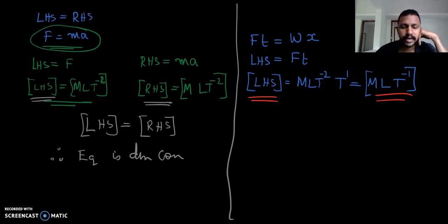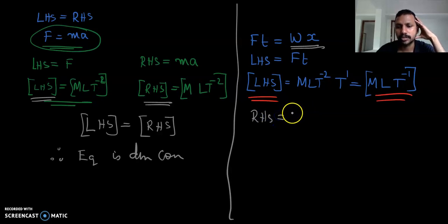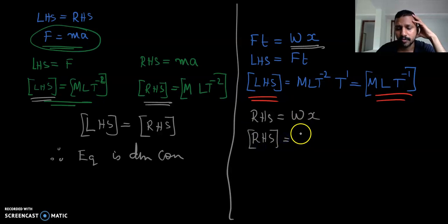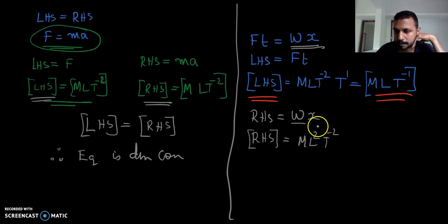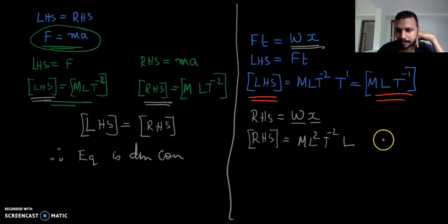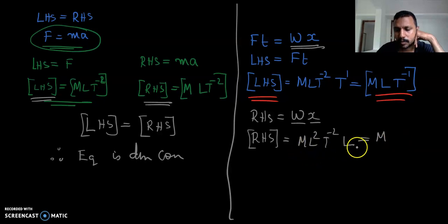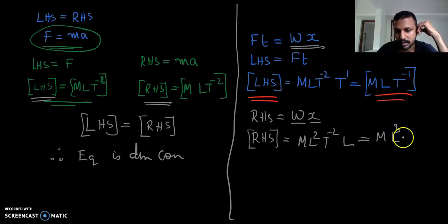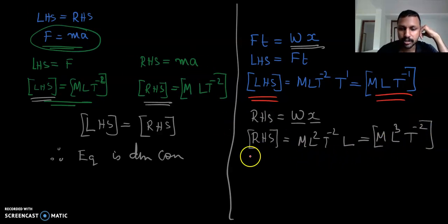Now let us find the dimensional formula of RHS. The RHS is W into X — that is work into displacement. The dimensional formula of work is ML squared T raised to minus 2, and the dimensional formula of displacement is L. Simplifying, ML squared into L gives L raised to 3. Therefore, the dimensional formula of RHS is ML cubed T raised to minus 2.